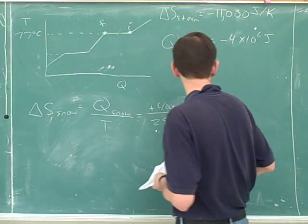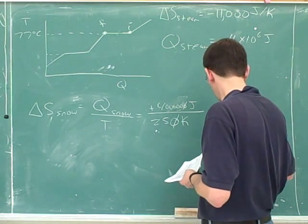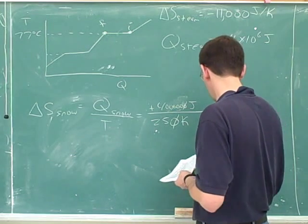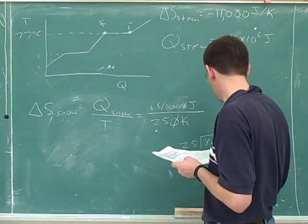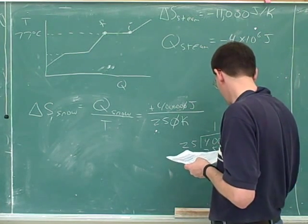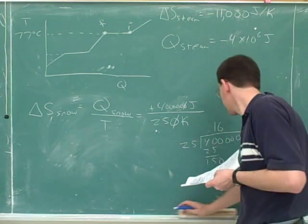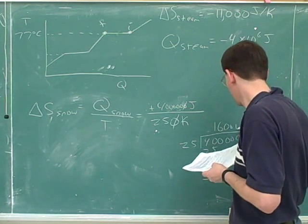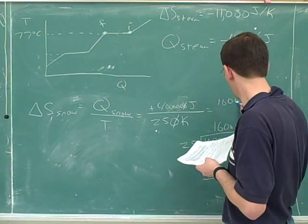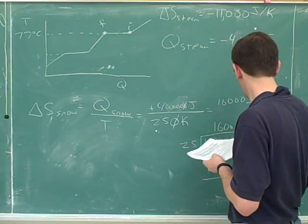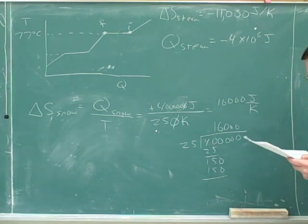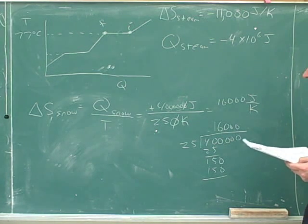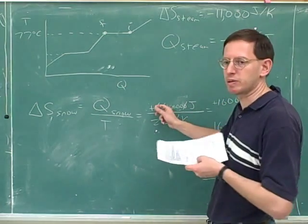So you cancel the zero. That's good. So it's 16,000? Yeah. Going once. Joules per Kelvin. Going twice. All right. So then what is our answer for part C? 16,000 joules per Kelvin. Positive 16. Positive. That's right.